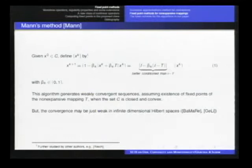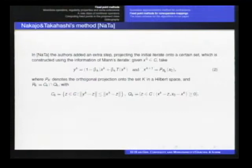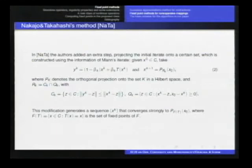This algorithm generates weakly convergent sequence, of course, assuming existence of the fixed point of the non-expansive mapping T, assuming now that T is closed and also convex. In this case, there are some counterexamples. I mean, it is not possible to ensure strong convergence of the sequence of iterates. Well, another idea is you can find this paper from Nakahawa and Takahashi.